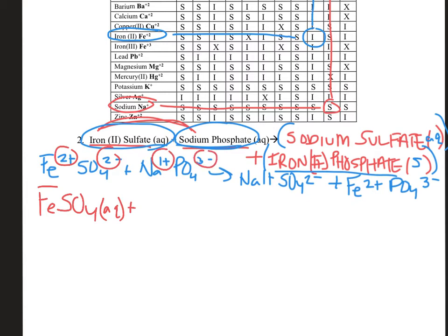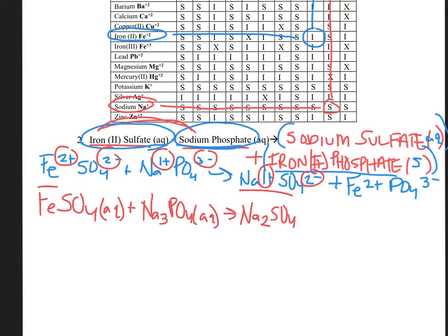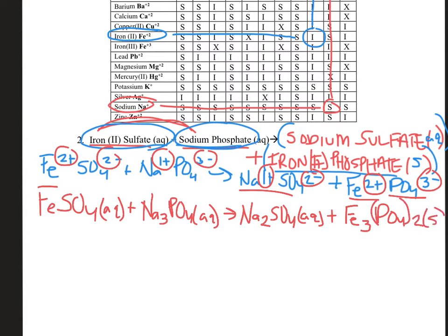Next up, sodium is +1 and phosphate is -3, so we're going to need three sodiums to cancel out with that one phosphate — and that is aqueous as well. Next up, sodium and sulfate: sodium is +1, sulfate is 2 minus, so I'm going to need two sodiums to cancel out with the sulfate, and we found from the solubility chart that that's aqueous. And last but not least, we have iron two with phosphate. In order to get those charges to zero — +2 and -3 — we need to reach +6 and -6, so we need three irons and two phosphates. They balance out to zero and I've got my solid.